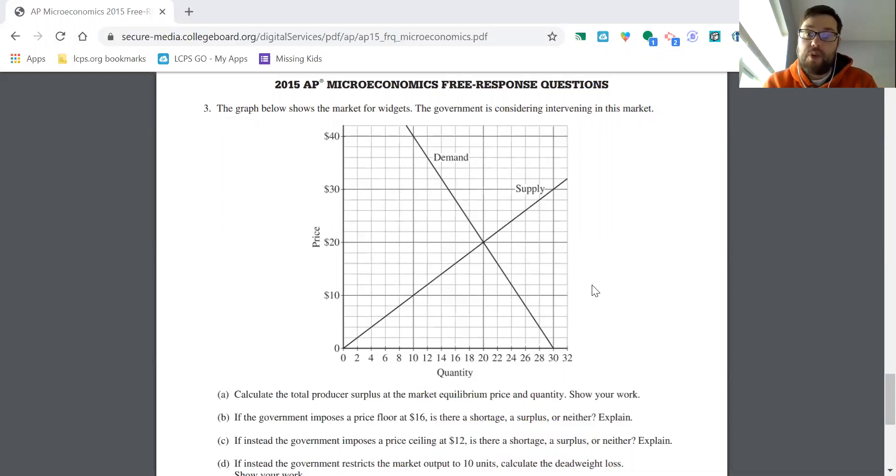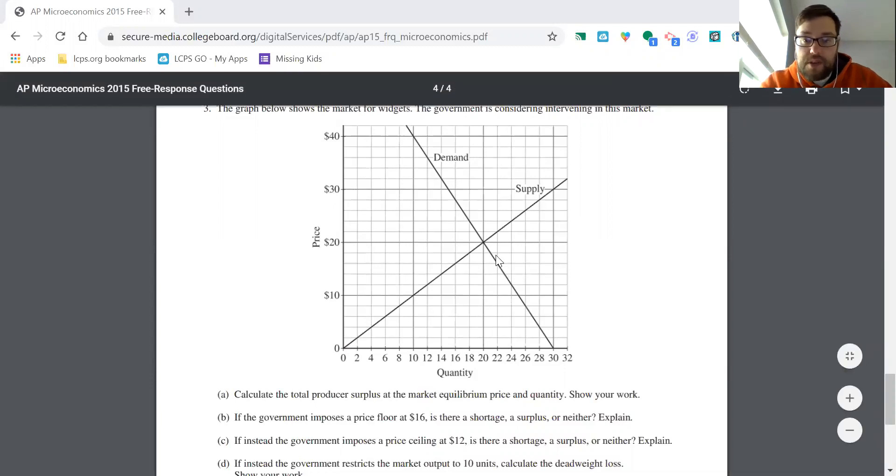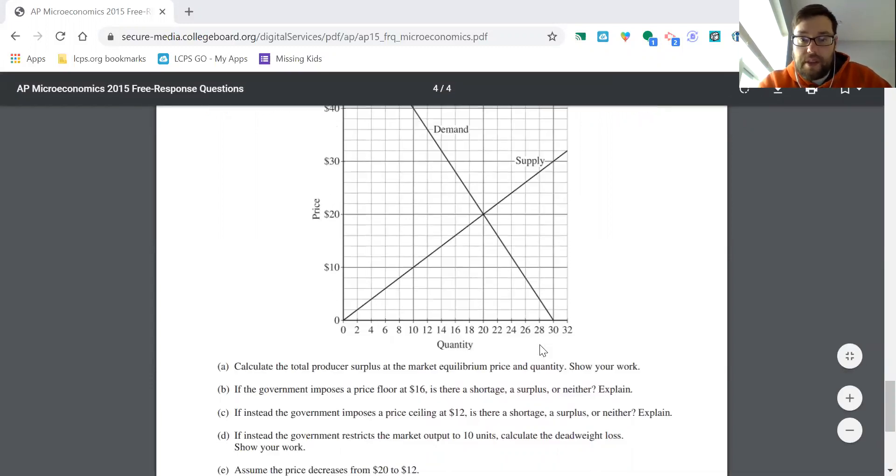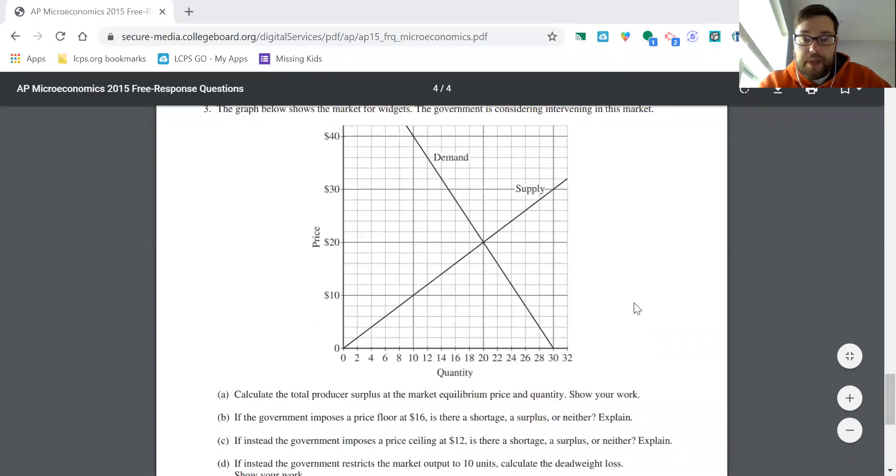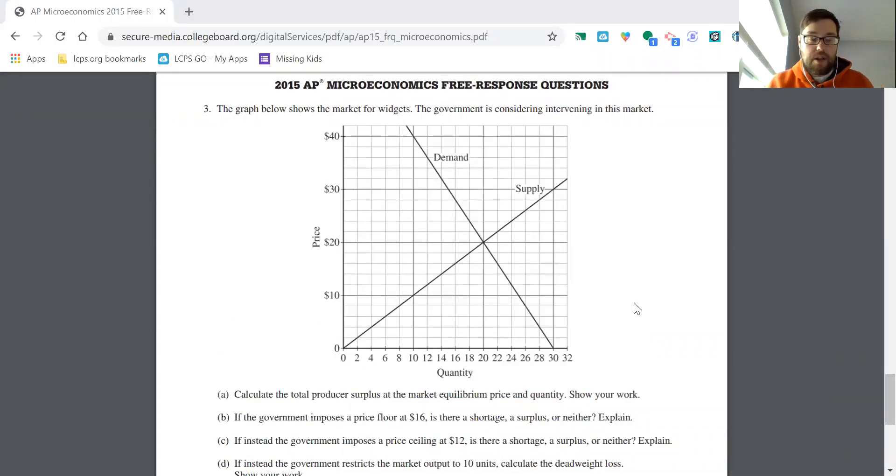This one sets up, they give us a graph here. The graph shows the market for widgets. The government is considering intervening in this market. So this is a pretty straightforward supply and demand graph. We have various prices, quantities, and then they're going to ask us about a number of policies that the government could intervene in this market.